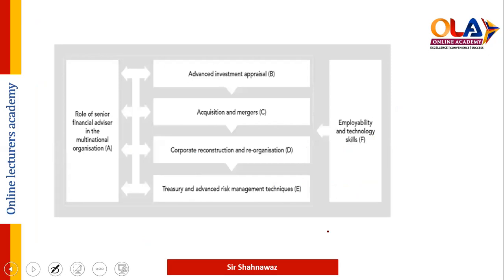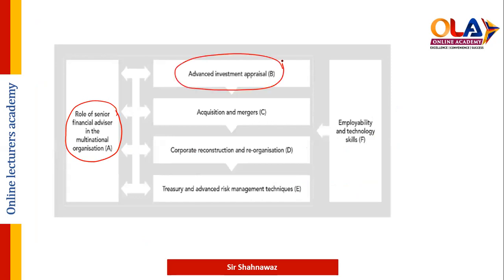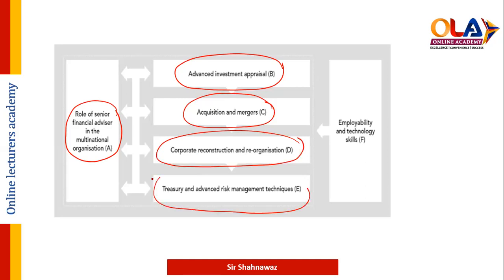This diagram shows all the important areas of the syllabus: Section A — Role of Senior Financial Advisor; Section B — Investment Decision; Section C — Acquisition and Mergers; Section D — Reconstruction and Reorganization; and Section E — Treasury and Advanced Risk Management, plus employability and technological skills. Investment decisions and mergers and acquisitions are considered the most important areas.